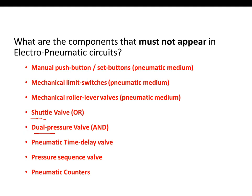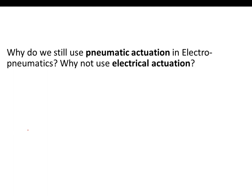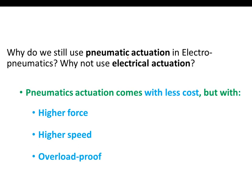Why do we still use pneumatic actuation? This is a question always posed by viewers — why not replace pneumatic actuators with electric motors? The reason is that pneumatic actuation costs less, brings higher force, higher speed, and it is overload proof. Overload proof simply means when you overload the pneumatic motor, it will not spoil.